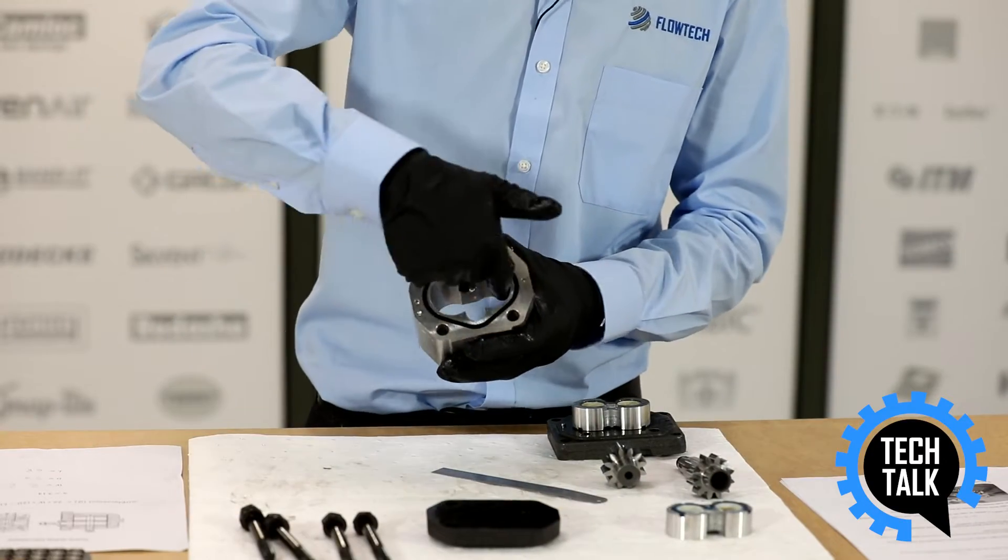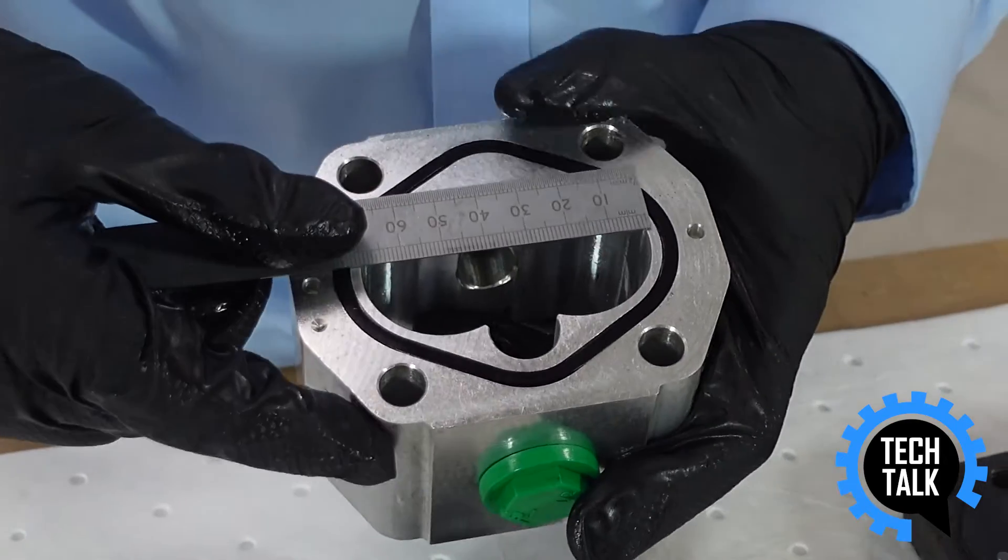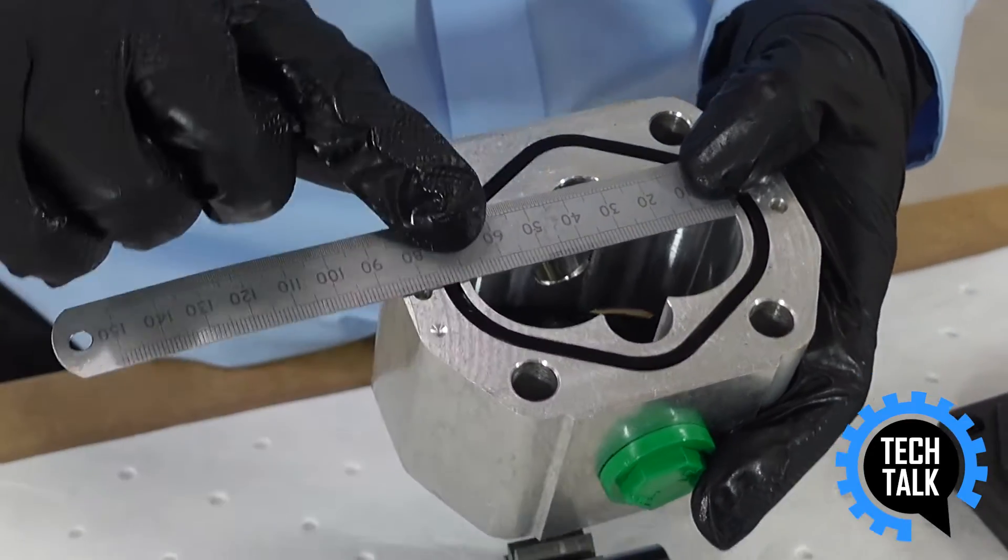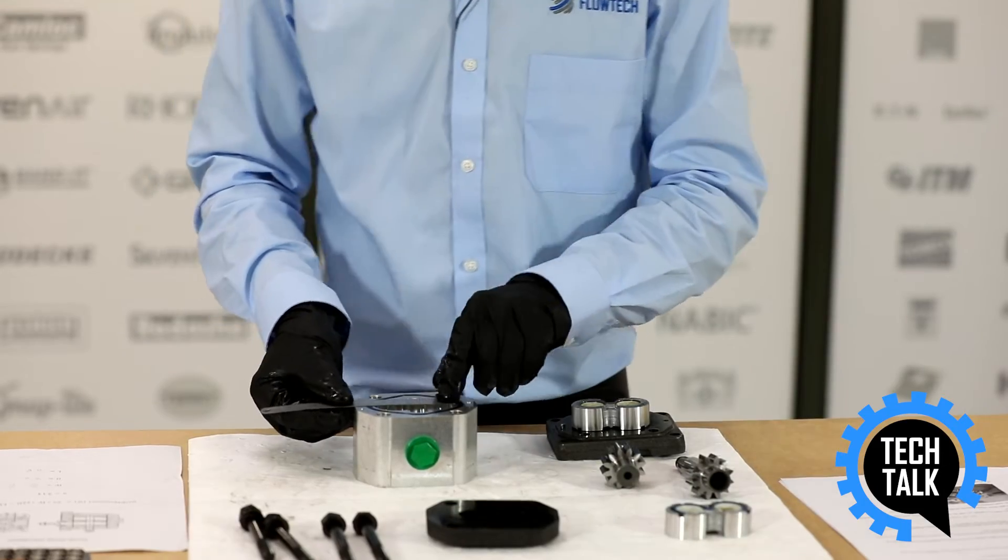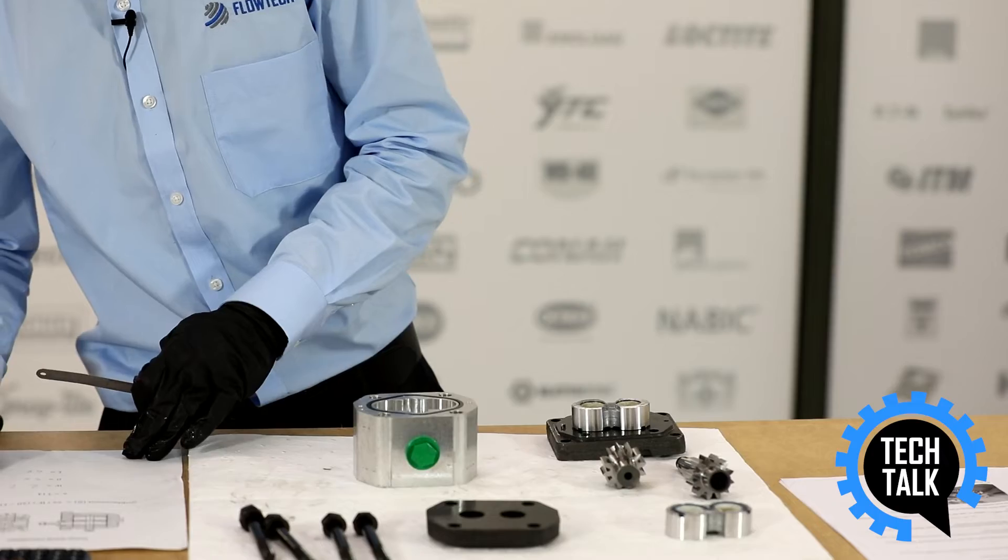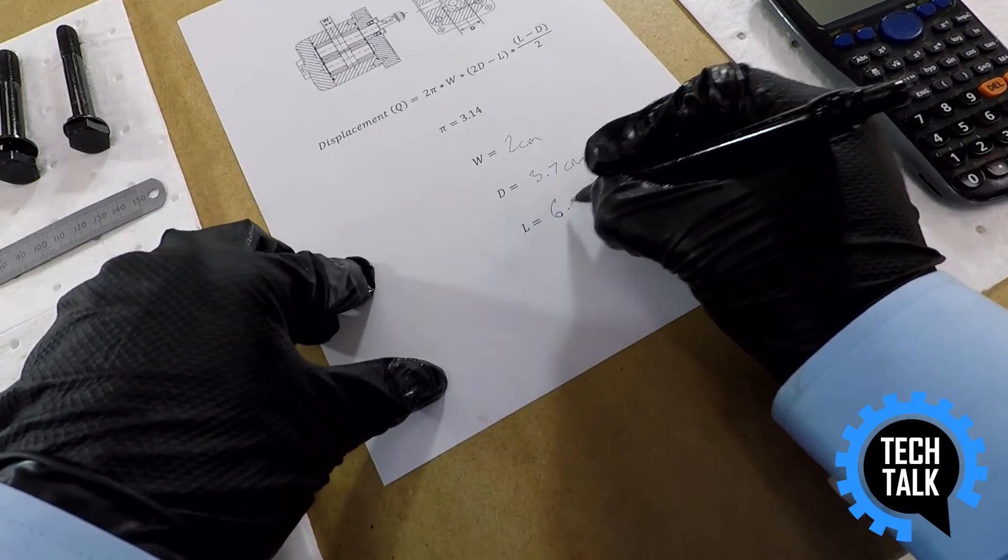And then the last length that we need, which is the length across the inside of the gear pump body, which is 68 millimeters, which is 6.8 centimeters.